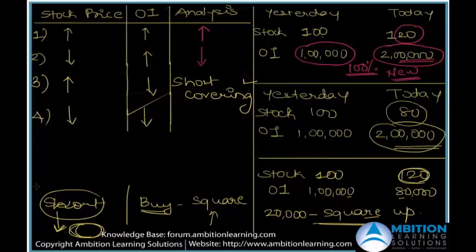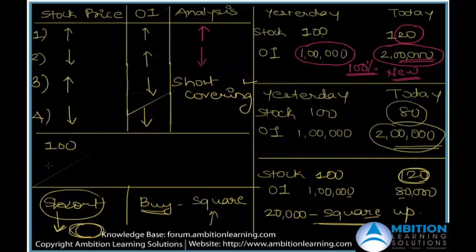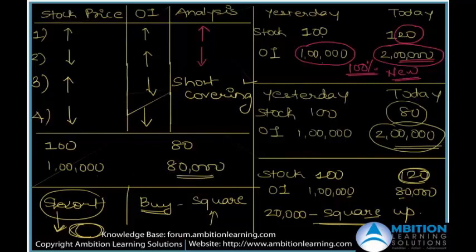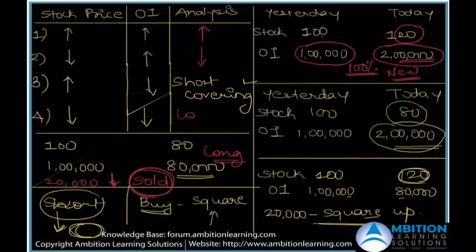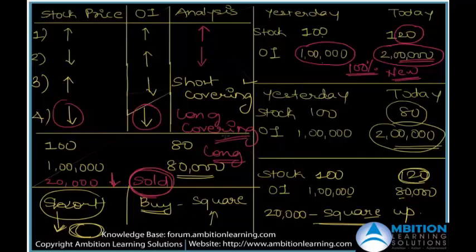The fourth scenario: stock price is dropping and open interest is also dropping. Yesterday stock was at 100 rupees, open interest was 1 lakh. Now both have dropped — meaning around 20,000 people squared up, and because they sold to square up, the price went down. If they sold to square up, their original position was long. This is called long covering, and it means people are anticipating the stock might not go above this level. This also does not give a directional long or short signal.